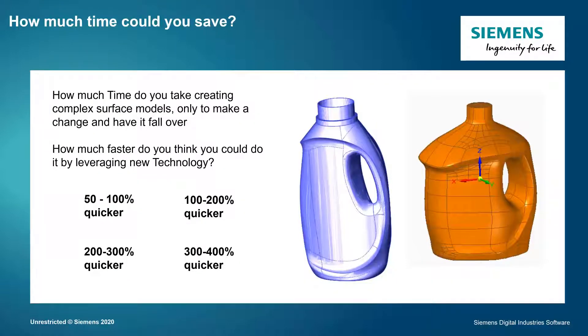So how much time could you save? If you're looking at creating complex surface models, we're going to spend a lot of time, and quite often making a small change can cause features to fail, meaning we have to spend a lot of time figuring out what hasn't rebuilt properly. So using this subdivision modeling tool, how much faster could we make this? 50–100% faster, over twice as fast, 200–300% faster, or three to 400% faster? Depending on the complexity of the model, it varies — just have a think while watching this presentation and we'll come back to this at the end.